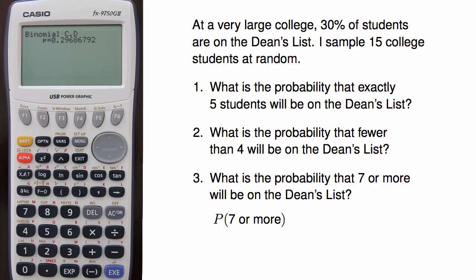That's the right tail of the binomial distribution, and the calculator won't give me the right tail, but I can compute the left tail. So if I compute the probability that there are 0, 1, 2, 3, 4, 5, or 6 students, I can subtract that from 1 and get the probability for 7 or more.